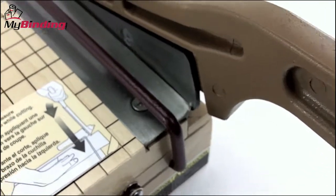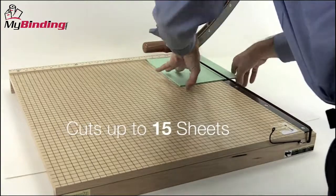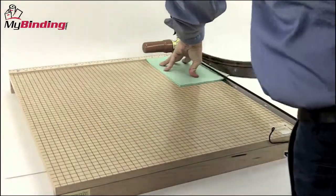The blade is very sharp, so use the safety wire and use common sense and caution. The Swingline Ingento 24 can cut up to 15 sheets of 20-pound paper per lift.